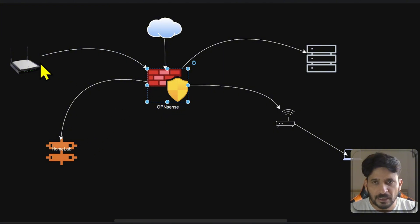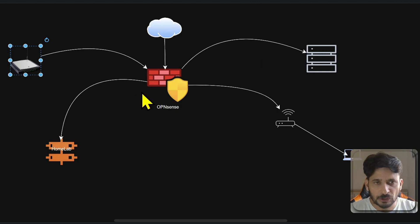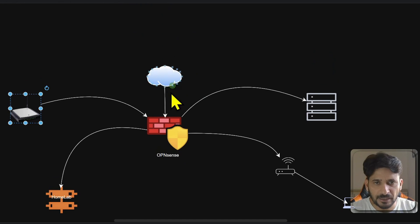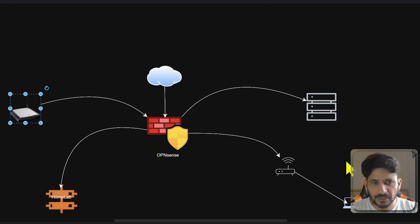We can define firewall rules — for example, if you want to access from the guest network, should we allow the guest network to access the servers? Should we allow users to access the servers? Should we allow users to access the internet? And should we allow people from the internet to access my servers, my laptop, or my home network? We can create firewall rules to allow or block access from or to any network.